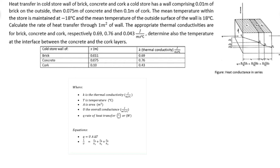Calculate the rate of heat transfer through 1m² of wall. We are also given the appropriate thermal conductivities of brick, concrete and cork respectively at 0.69, 0.76 and 0.043. So frequently in heat conduction, heat passes through several consecutive layers of different materials. In this case we are dealing with brick, concrete and cork.